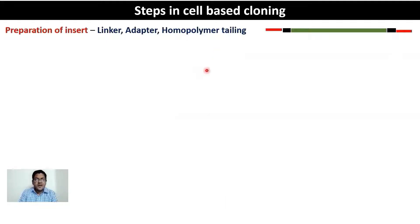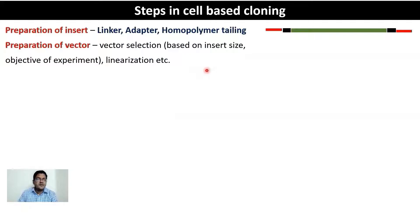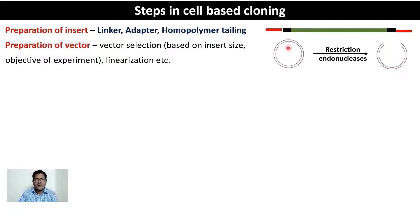The next step is preparation of the vector. Which vector to select depends on the insert size and the objective — whether you want just amplification or also protein expression. Most vectors are circular and must be opened using a restriction enzyme. Which restriction enzyme to use depends on what staggered ends are present on your insert, so the choice of restriction enzyme to open the vector depends largely on the nature of the insert.